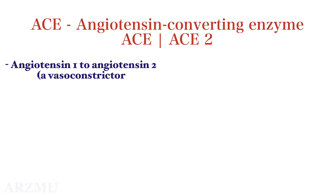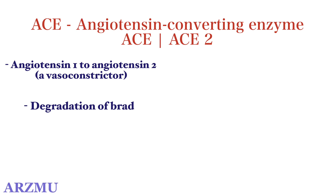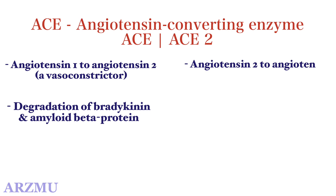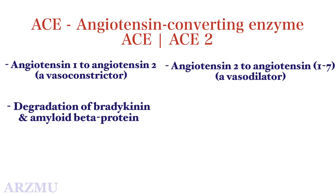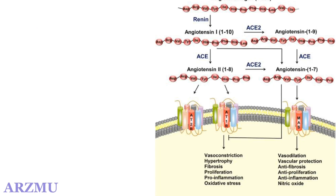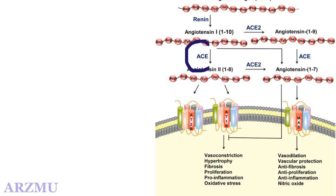ACE degrades angiotensin I to angiotensin 2, which is a vasoconstrictor; ACE also degrades bradykinin and amyloid beta proteins. However, ACE2 degrades angiotensin 2 to angiotensin 1-7, which is a vasodilator. ACE2 also cleaves bradykinin, apelin, neurotensin, dynorphin A, and ghrelin. ACE2 thus counters the activity of ACE by reducing the amount of angiotensin 2 and increasing angiotensin 1-7.